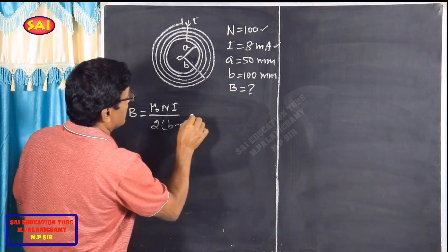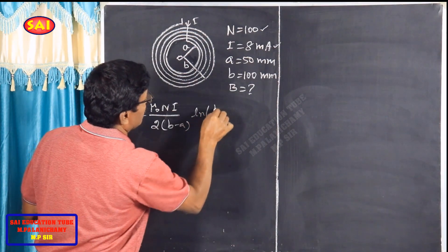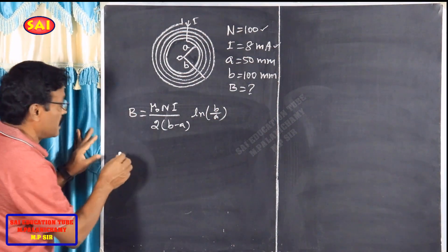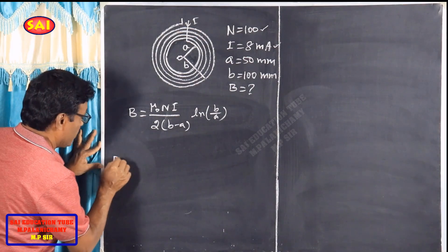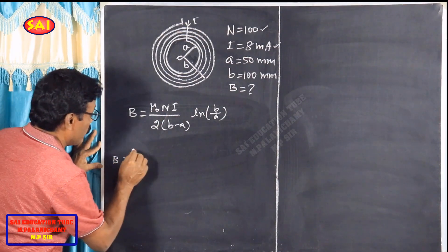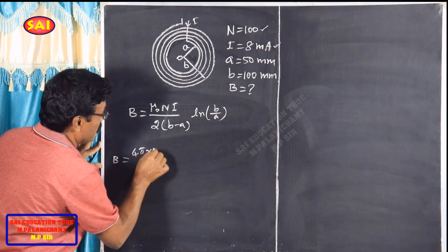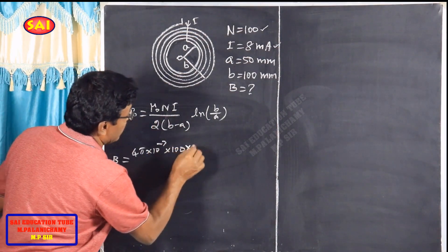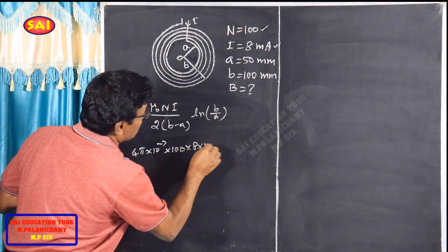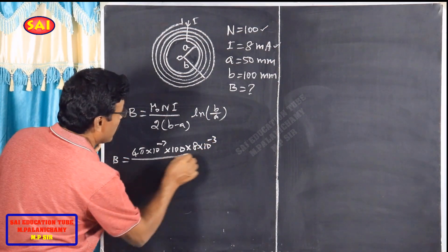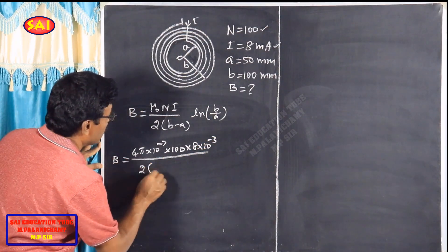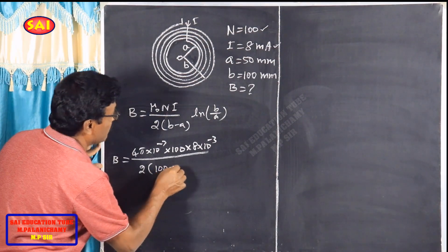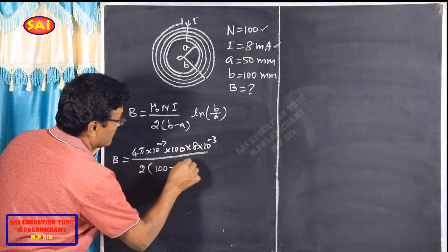The formula involves b minus a and natural log of b by a. B is equal to μ₀ — that is 4π into 10 power minus 7 — multiplied by N equal to 100, I equal to 8 into 10 power minus 3, divided by 2, times b equal to 100 into 10 power minus 3 minus a equal to 50 into 10 power minus 3.